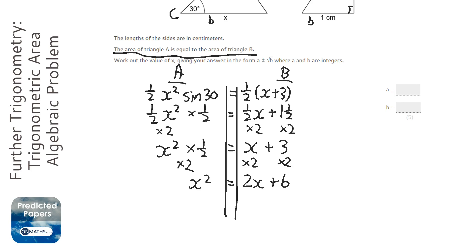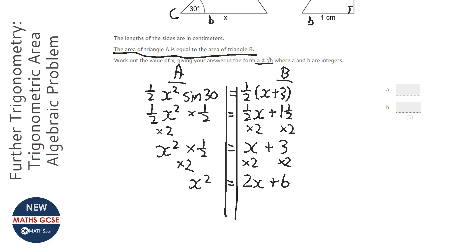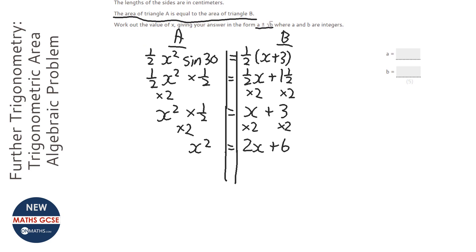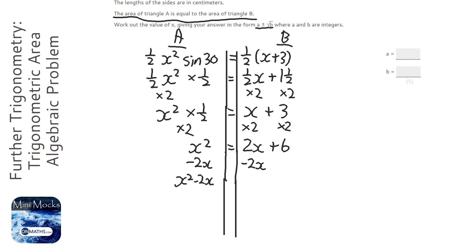The question asks for the answer in the form a plus or minus root b, which hints that we're going to complete the square. It means we can't work out an exact decimal answer but can express it as a square root. You could also use the quadratic formula, but I'm going to complete the square. To do that, we need the x terms on the same side, so I'm going to take away 2x from both sides, giving us x squared minus 2x equals 6.